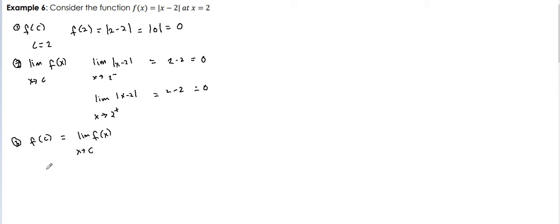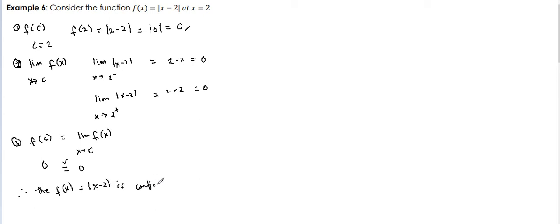That means our f of c is equal to the limit of our function as x approaches c — our f of c is 0 and our limit is also 0. So therefore, the function f of x equals the absolute value of x minus 2 is continuous at x equals 2. Now let's see if it is differentiable.